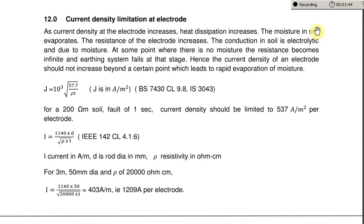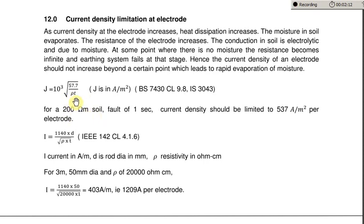Similarly, IS 3043 also gives a formula for this current density. You can see this formula where Rho is the resistivity of the soil in ohm-meter, T is the duration of the fault in seconds. We can take T as one second, and J gives the current density in amps per meter square.